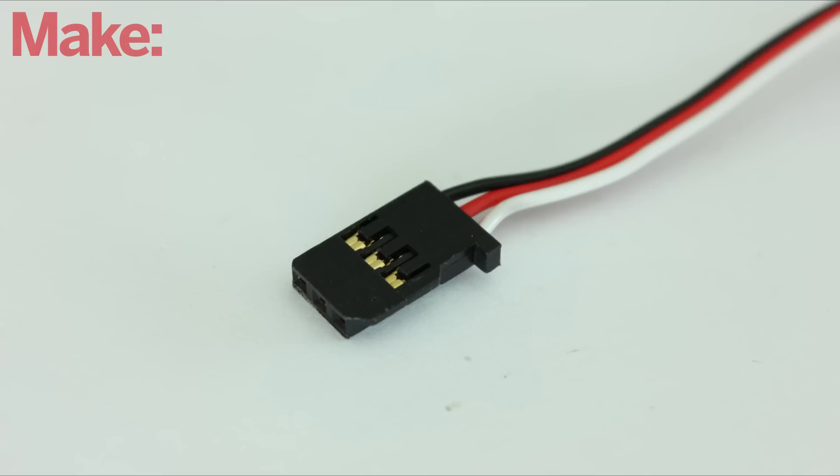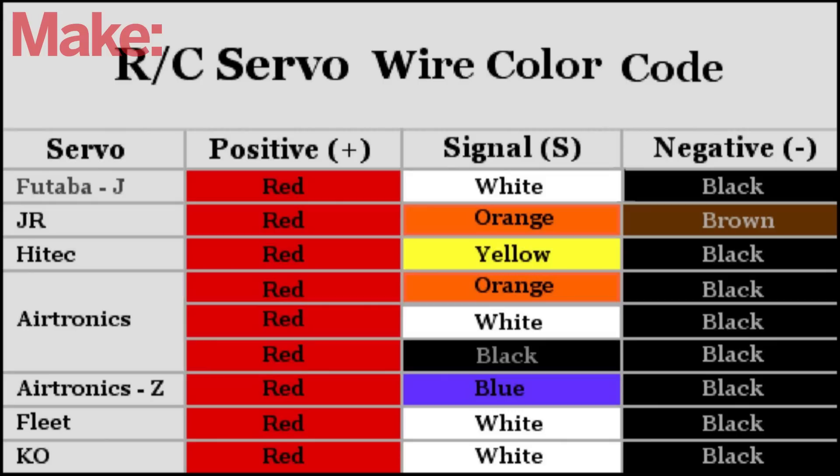Before you can connect the servos, you need to first identify each of the connector wires. In all cases, there will be one positive wire, one negative wire, and one signal wire. But the colors vary depending on brand.